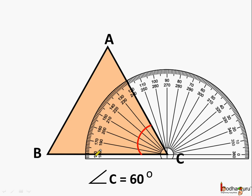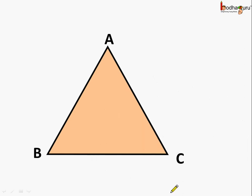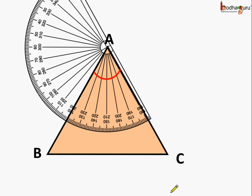Starting from 0 degrees, we count 10, 20, 30, 40, 50, 60 — this angle is also equal to 60 degrees. Now let us measure angle A. Again we count 10, 20, 30, 40, 50, 60 — this angle is also equal to 60 degrees. So all three angles are equal to 60 degrees.